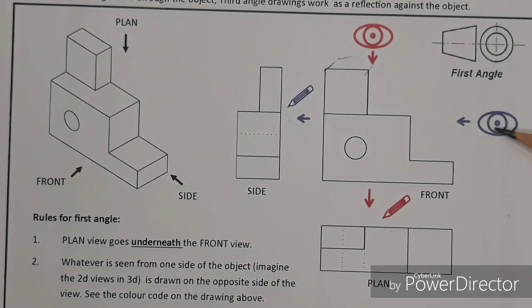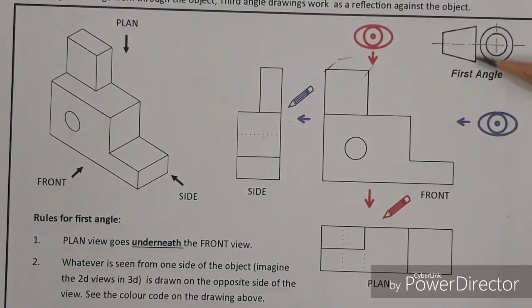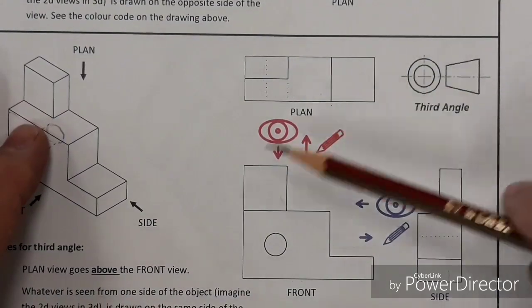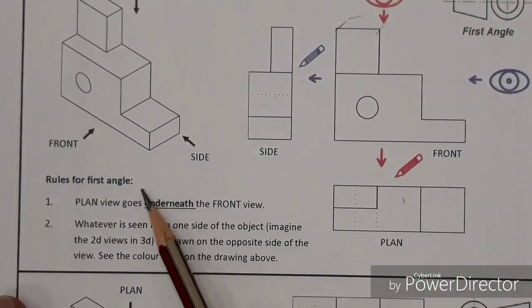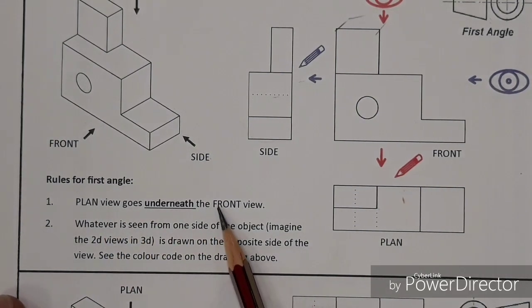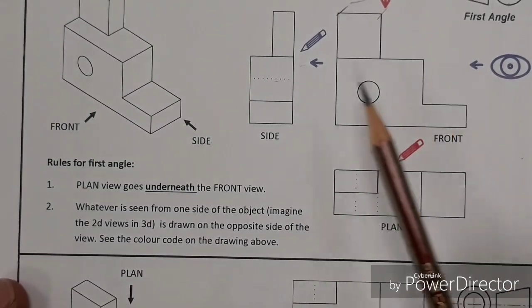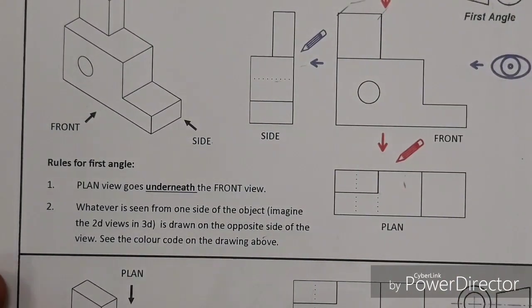First angle, the view that we see jumps over the shape and is drawn on the opposite side. First angle is the opposite. Third angle is always a reflection of what you see. That's the way that I remember it. To summarize, rules for first angle: your plan view goes underneath the front view, and whatever is seen from one side of the object, imagine the 2D views in 3D, is drawn on the opposite side of the view. If you look at these color codes, that'll make that very clear to you.